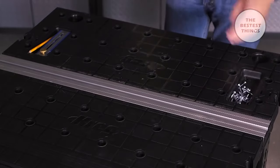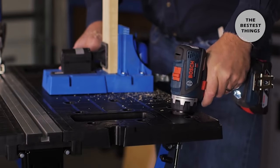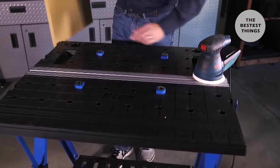The tables feature recessed trays that can hold hardware, small parts, and other supplies, and are equipped with a pair of handy drill holsters. Holes on the tabletop also accept the four included bench dogs.